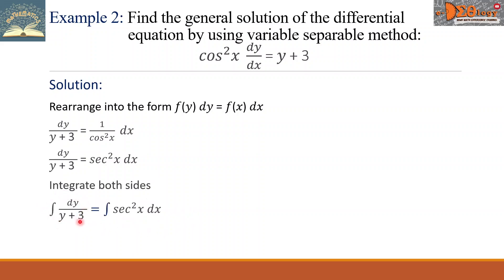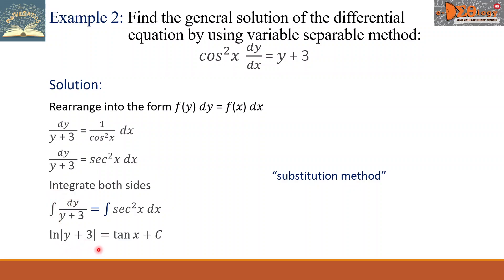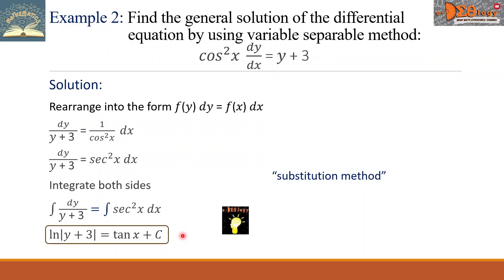Remember, on the left side we use the substitution method from calculus. So the integral of the left side gives the natural log of the absolute value of (y plus 3), which equals the integral of secant squared x dx, which is tangent x. Then we add plus c. This is the final answer.